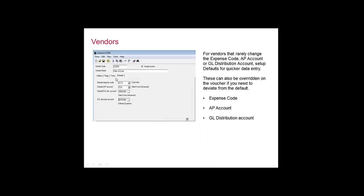In the vendor setup, you can also set up defaults. Let's say you have a vendor — clerk of court — that always goes to expense code E112 for court fees. You can set a default AP account and a default GL account on the vendor. When you pay the clerk of court, you're always billing a client, so default it to your CCA (client cost advanced) AP account so you don't have to remember when creating a voucher. The discount account field is required within Juris, but if you don't give a discount, it will never be utilized.